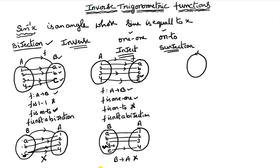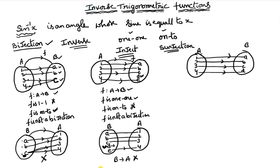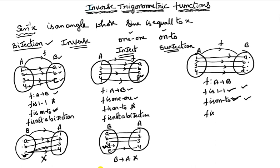Another example: set A has elements 1, 2, 3, 4 and set B has elements a, b, c, d. Now 1 connects with a, 2 with b, 3 with c, and 4 with d. F is a function from A to B. It is a one-one function since different elements have different associations. It is also an onto function because every element in B has a pre-image. So f is a bijection.